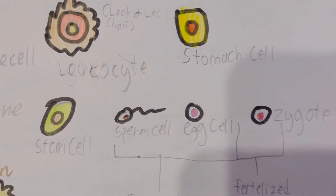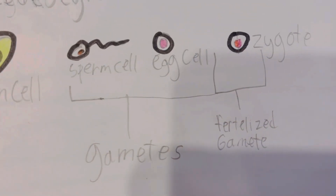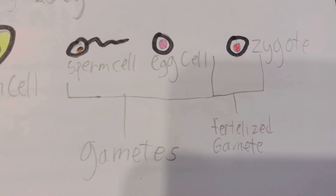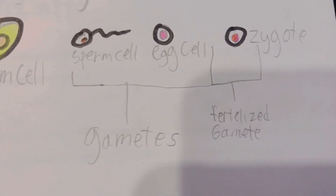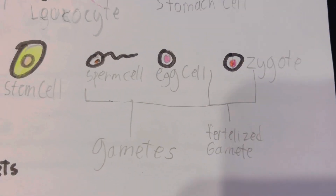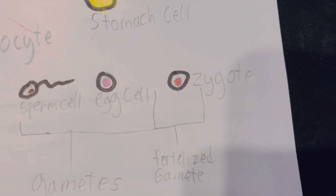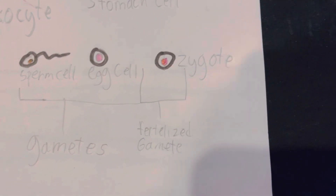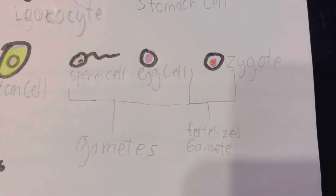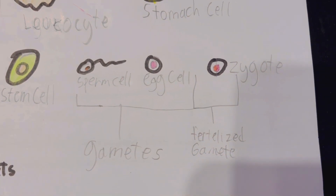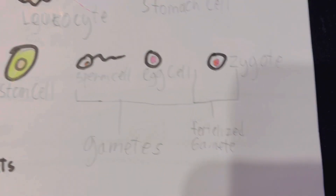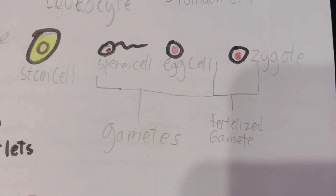Next, these are the gametes. A sperm cell contains 23 chromosomes. It fuses with the egg cell, and when they fuse you get 46 chromosomes, creating a zygote, which is a fertilized gamete. Fertilization happens when a sperm cell and an egg cell unite and their DNA turns into one combined cell. When they fuse you get a zygote, which can now turn into a cute little baby.